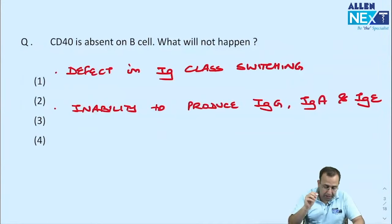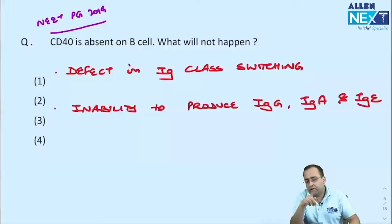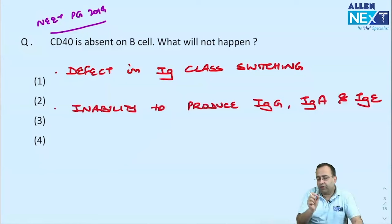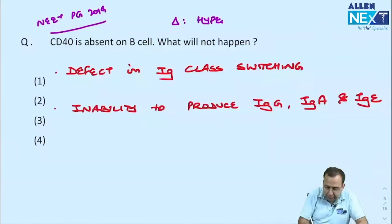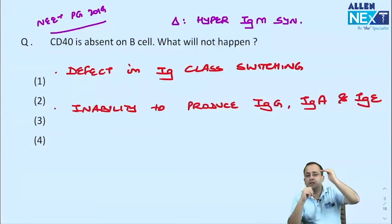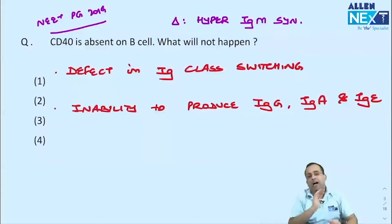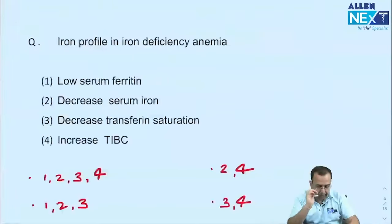CD40 absent on B cells — same question as NEET PG 2019, with a flow cytometry dot plot for hyper-IgM syndrome analysis. If CD40 is absent on B cells, the diagnosis is hyper-IgM syndrome — a defect in immunoglobulin class switching. IgM antibodies are increased. The main issue is inability to produce IgG, IgA, and IgE.